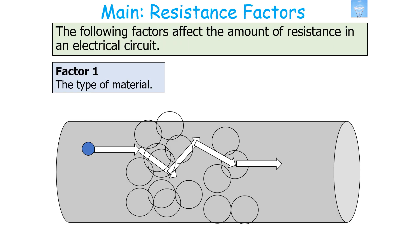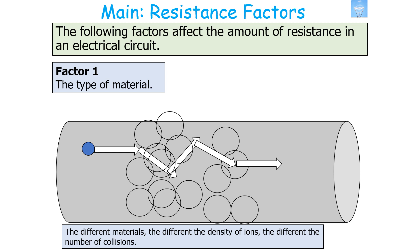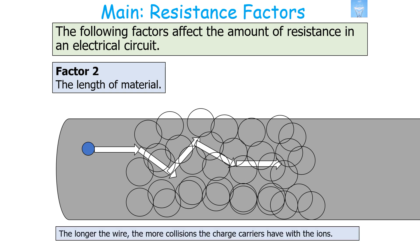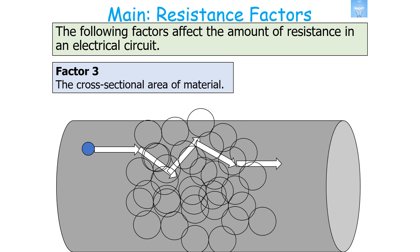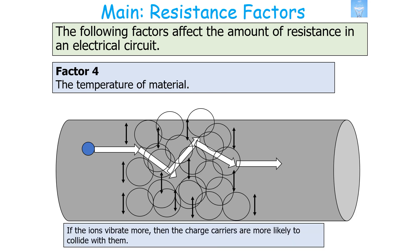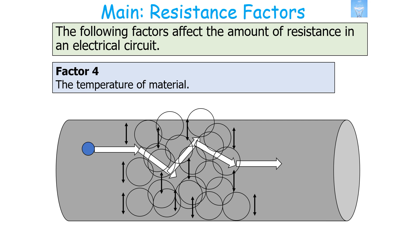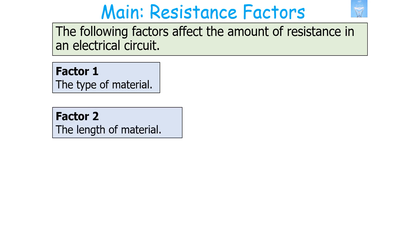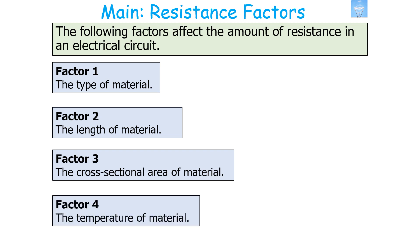There are four factors that affect resistance in an electrical circuit. First, the type of material, because different materials have different ion densities and therefore different numbers of collisions. Second, the length of the material — the longer the wire, the more collisions. Third, the cross-sectional area — a greater cross-sectional area means fewer collisions. Fourth, the temperature — if the ions vibrate more, charge carriers are more likely to collide with them.